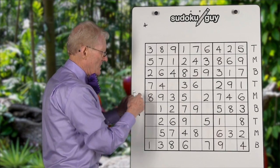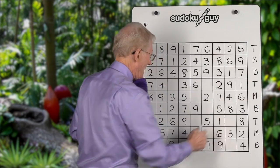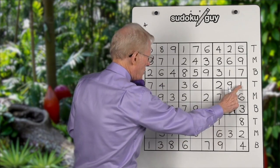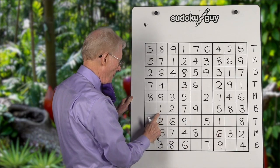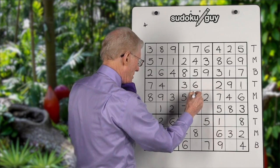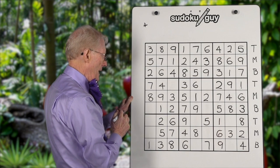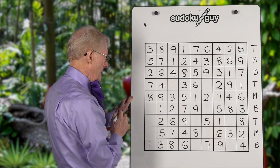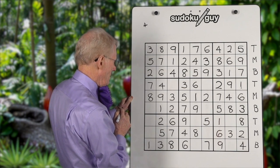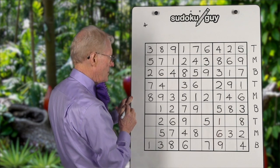So now we'll do the TMB for these three horizontal blocks. We'll start with the one. We have a top, we have a bottom, so this one goes in the middle. Anything else there — could there be a ramification? No, I don't see one.